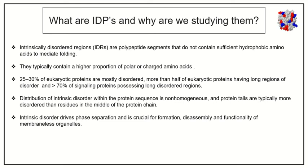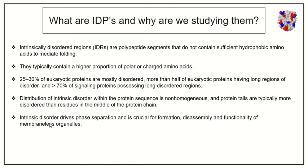In a protein chain, the disordered region is more abundant in the tail region of the protein and it is less abundant in the middle of the protein. Last but not the least, intrinsically disordered proteins are crucial for a phenomenon known as phase separation, which I will discuss ahead.